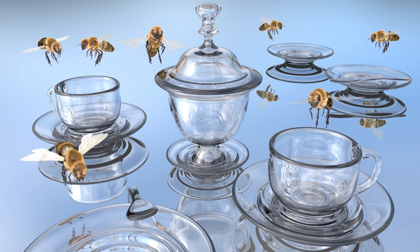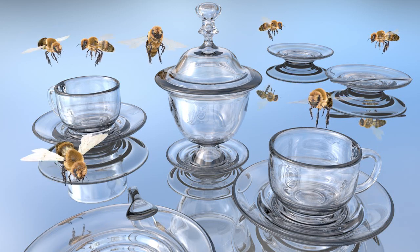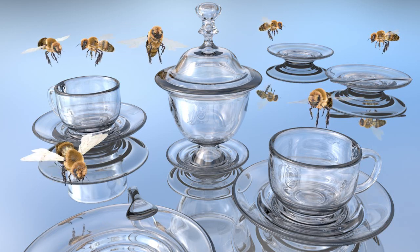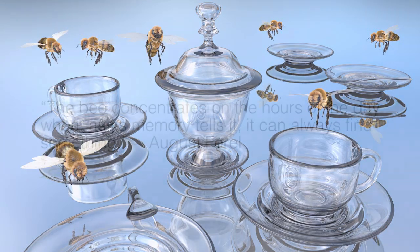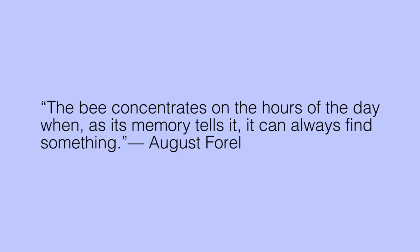The hive was too far away for the bees to be able to notice the dishware on the table each morning, and far too many bees were appearing right on schedule for it to have been the work of a scout bee. Did this mean that the bees had memorized what time of day food was expected to be on the table? Forel believed that the bee concentrates on the hours of the day when, as its memory tells it, it can always find something. He called this ability a time memory. These early observations certainly raised interest in the possibility of organisms possessing a time memory, but the question remained as to whether bees truly had an internal time sense or if they were using signals from their environment to tell what time of day it was.